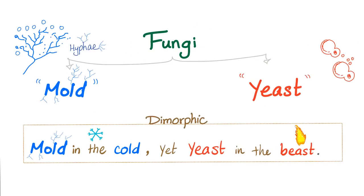Let's talk about fungi. We have two types: mold, aka hyphae - it has hyphae and spores - or it could be yeast. But some fungi are both mold and yeast; we call them dimorphic. Morpho means shape, and di means two. If the weather is cold, I will be mold, but if the weather is beast, I will be yeast. So we call it mold in the cold, yeast in the beast.